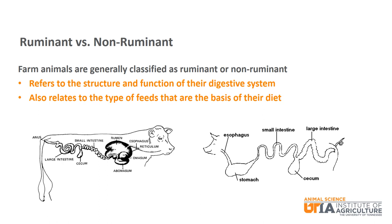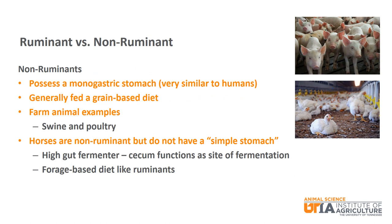Farm animals are generally classified as ruminants or non-ruminants. These classifications refer to the structure and function of their digestive system as well as the type of feed that is the basis of their diet. Non-ruminant animals possess a monogastric stomach and are sometimes called simple stomached. Their structure and function is very similar to that of humans. They primarily eat a grain-based diet.